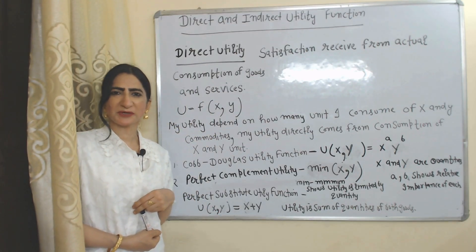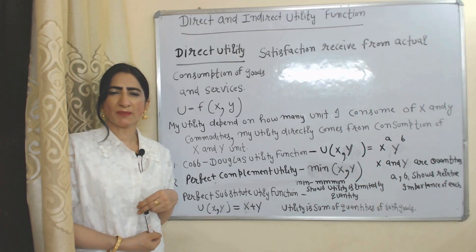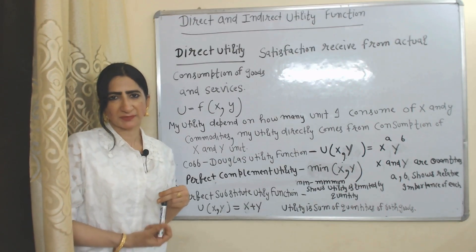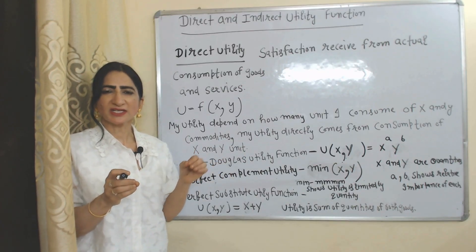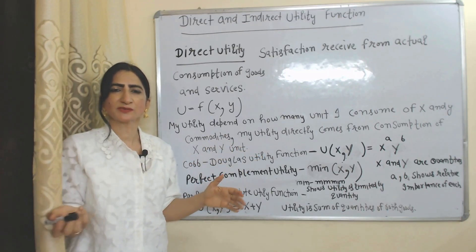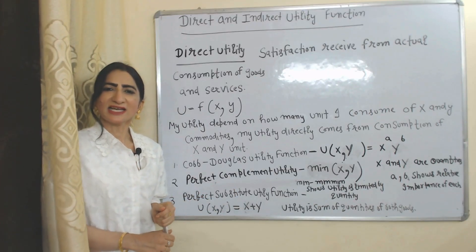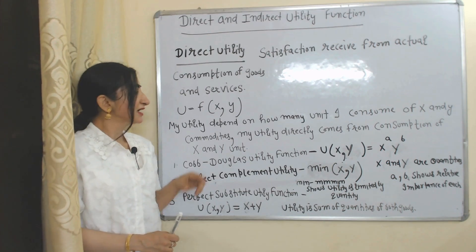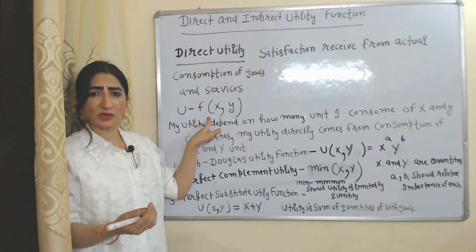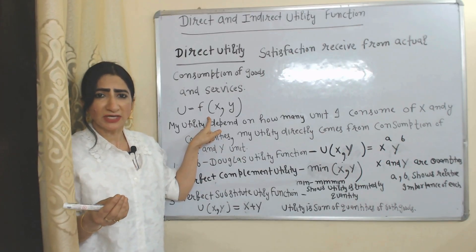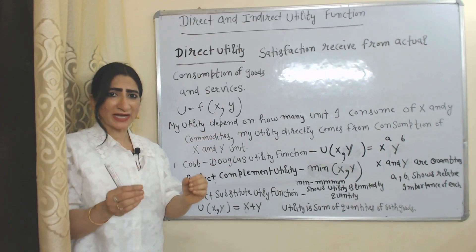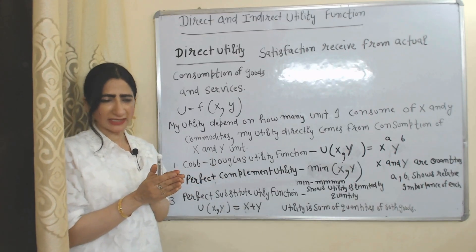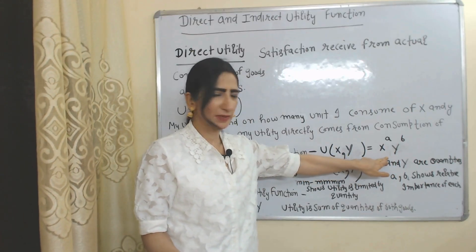Hello everyone, my name is Minister HTI. I hope you all are staying healthy. Today we are going to talk about direct and indirect utility functions. First, we will see direct utility function. Satisfaction received from actual consumption of goods and services will be called direct utility. Here, utility depends on how many units of X and Y I am consuming, so utility directly comes from consumption. Cobb-Douglas utility function is an example of a direct utility function.